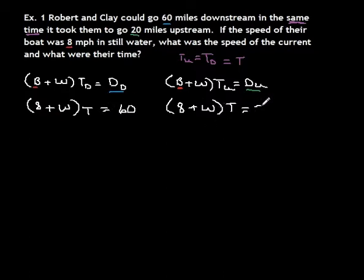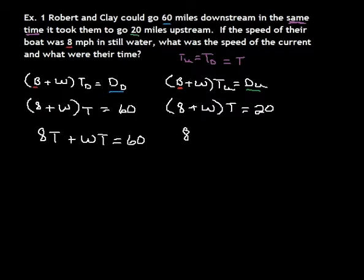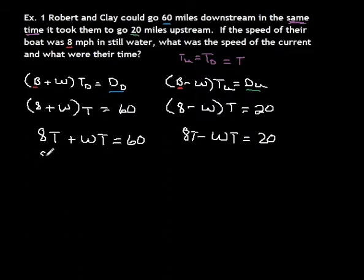We distribute: 8T plus WT equals 60. For the upstream equation, this should be minus — sorry about that — so 8T minus WT equals 20. Now we have two equations and we can use elimination.